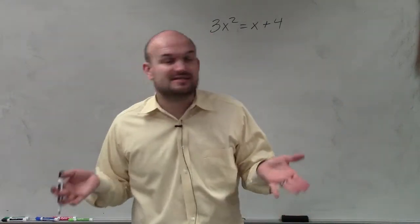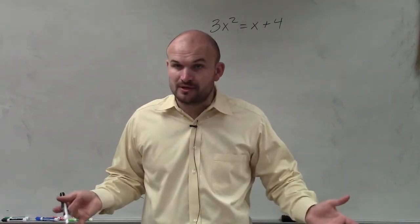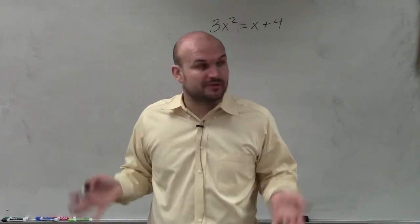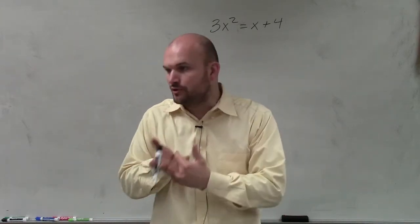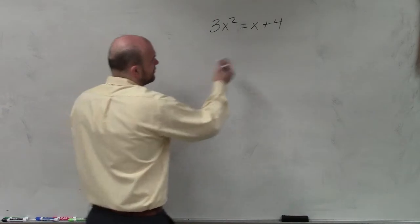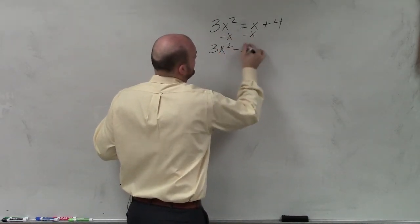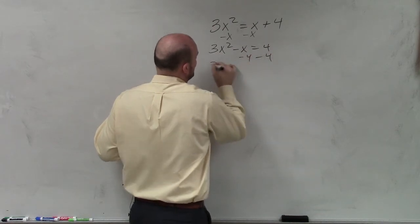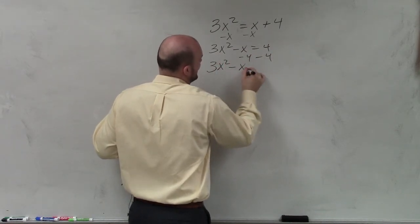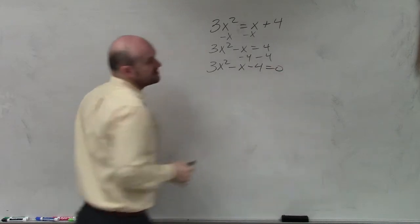So now what we're going to do is, now you guys see we have an equation that's not set equal to 0. So the first and main important thing we need to do is make sure it's set equal to 0 when we're going to be solving when we have more than 1x. So the first thing I'll do is subtract an x on both sides. So I have 3x² - x = 4. Then I subtract 4. Now I have 3x² - x - 4 = 0.